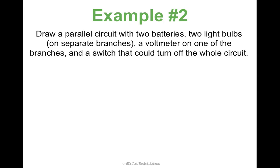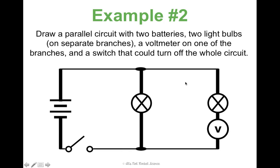Parallel circuits are a little bit more complicated. Draw a parallel circuit with two batteries, two light bulbs on separate branches, a voltmeter on one of the branches, and a switch that can turn the whole circuit off. For a parallel circuit, start with your rectangle, but since light bulbs need to be on separate branches, add another branch. There's my main rectangle with the extra branch. Two batteries back to back. Notice the light bulbs are on separate branches — I can go through just this light bulb or just that one. If I put them on the sides, they would have been in series. The voltmeter goes on one branch — I just picked this one.